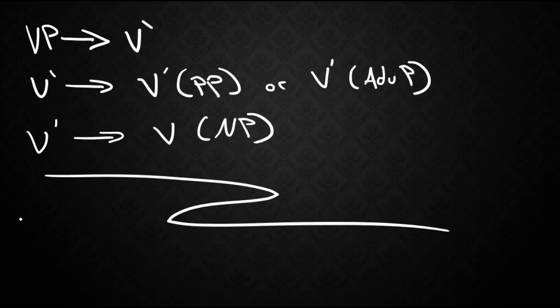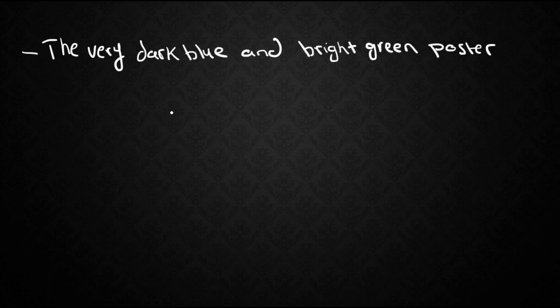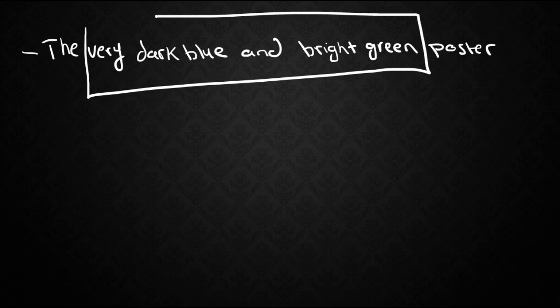Now let's move on to adjectives and adverb phrases. Let's start off with an example for the adjective phrase. Take the noun phrase the very dark blue and bright green poster. What we have inside here is an adjective phrase which modifies poster. But let's look inside this adjective phrase.